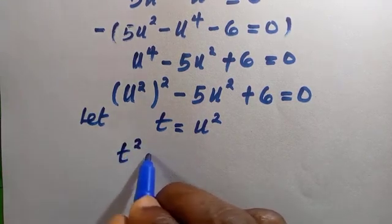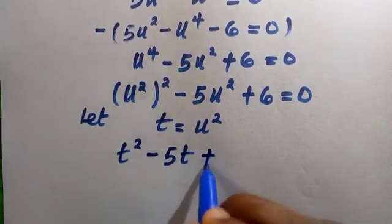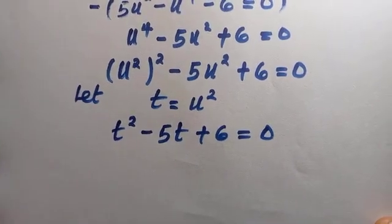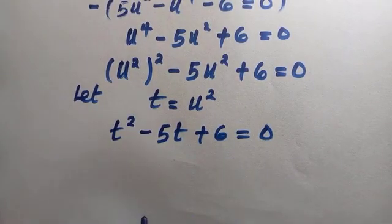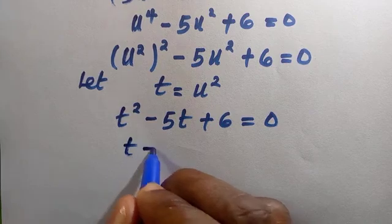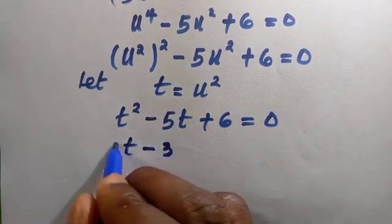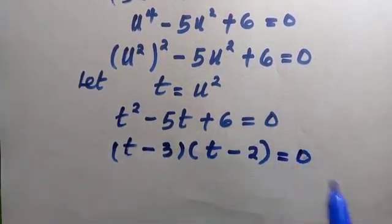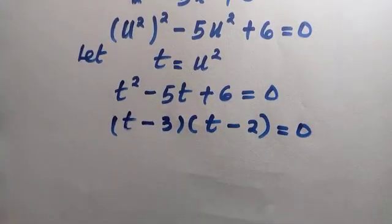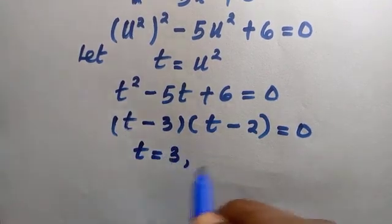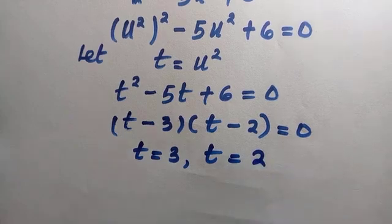We now have t² minus five t plus six equals zero — a quadratic equation which is easily factorisable. The factorization gives two factors: (t − 3)(t − 2) = 0, so the solutions are t equals three or t equals two.